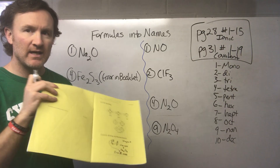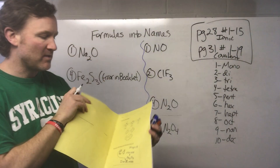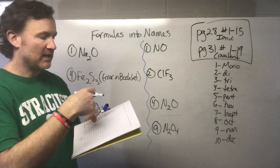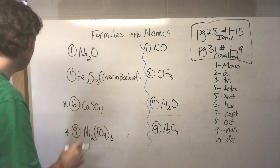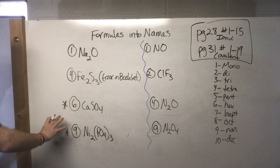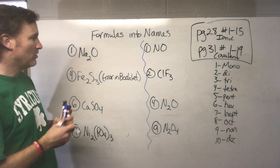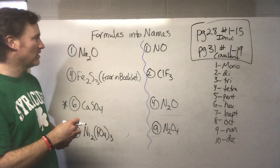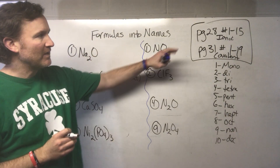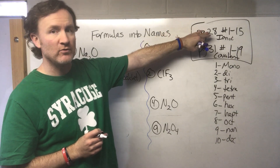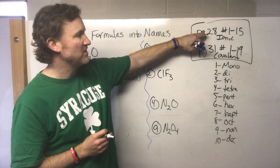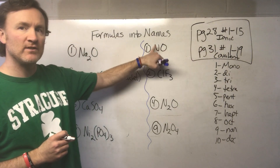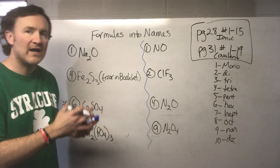In your yellow booklets — which say 'Bonding' on the top and 'Formula Writing and Nomenclature' on the bottom — you'll see pages with full written names and blanks for symbols, and pages with just symbols and blanks for the name. For homework: page 28, ionic materials, numbers one through fifteen (we'll do four together, leaving nine for you); and page 31, covalent ones, numbers one through nineteen (we'll do four together as well).